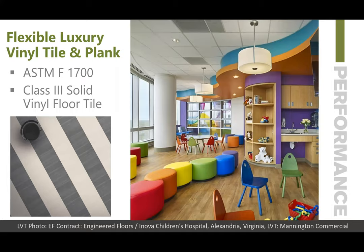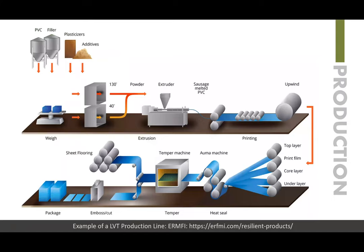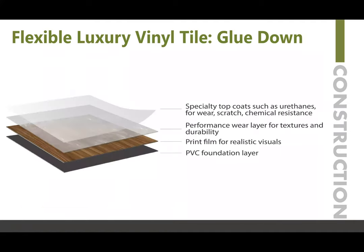In LVT production, there are many layers: the top layer, print film, core layer, underlayment — they come together through a heating process to create sheeting that is then cut into various tile types. For glue-down flexible luxury vinyl tile, it has a PVC foundation layer, the print film for realistic visuals, a performance wear layer that adds textures and durability, and specialty top coatings.